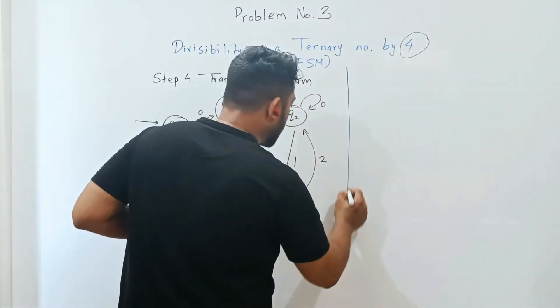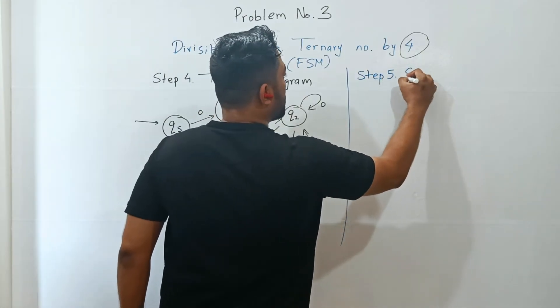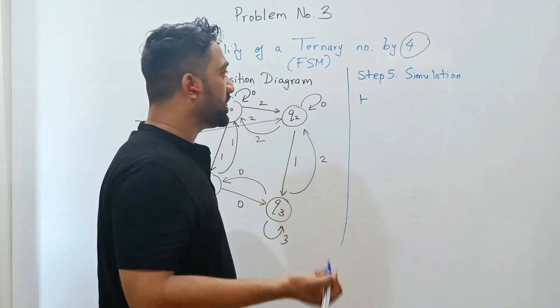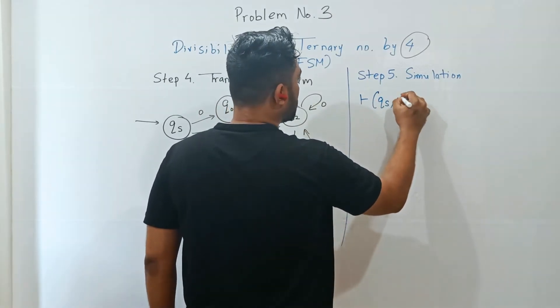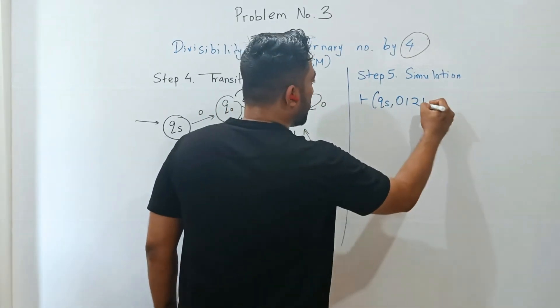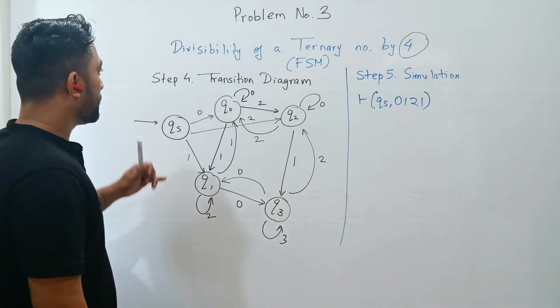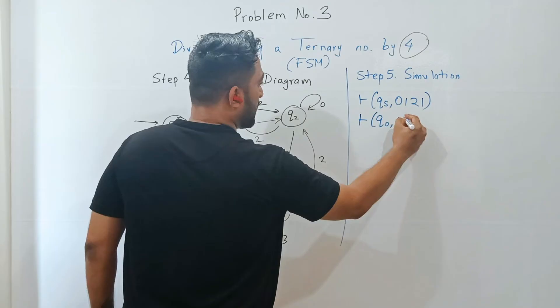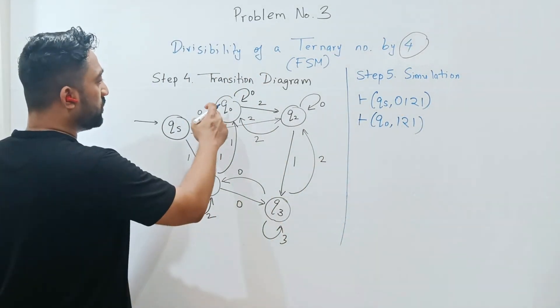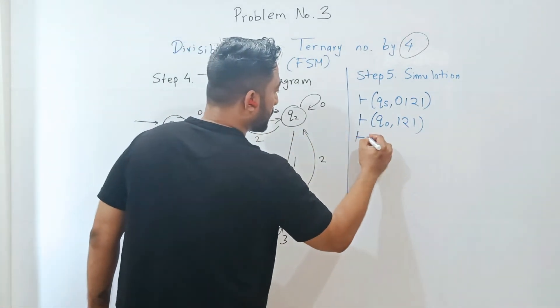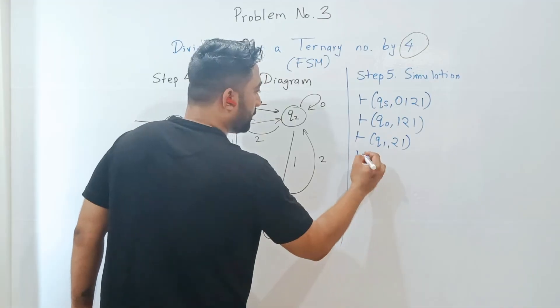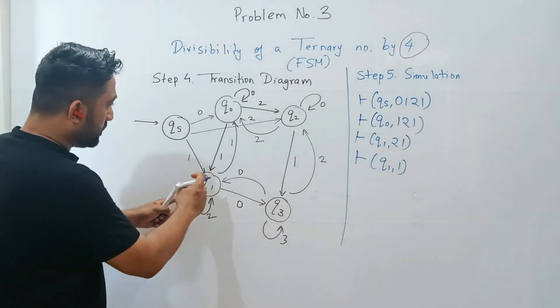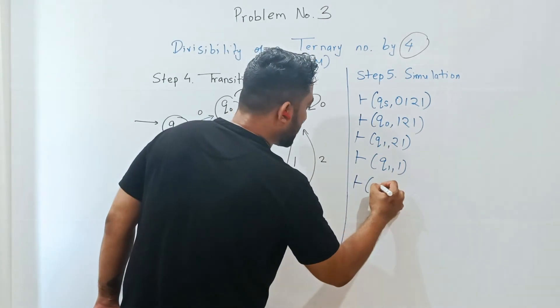Let's come to the final step. The final step is simulation. Simulation is very simple, just follow along. Take some example. I'm taking the example 0121. I have to check whether this number is divisible by 4 or not. qs on 0 goes to q0. Then q0 on 1 goes to q1. Then q1 on 2 remains in q1. Now q1 on 1 goes to q0. It is divisible in fact.